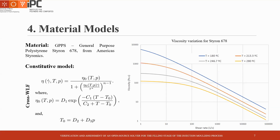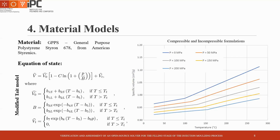The material used in the calculations was a polystyrene Styrene 678 from Americas Tyranics. The rheological constitutive model chosen to give the variation of viscosity with shear rate, temperature, and pressure was the Cross-WLF model. This model was chosen because it is widely employed in injection molding studies and represents adequately the behavior of the employed material at the range of temperatures considered. Since both Open-Inge MoldSim and MoldX3D are made on a compressible basis, the modified Tait model was chosen as equation of state because it gives the most realistic results.